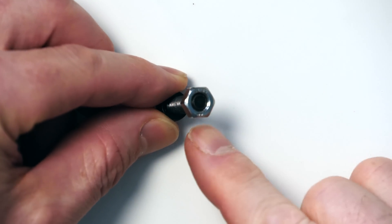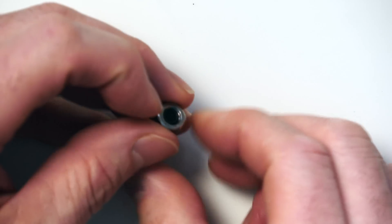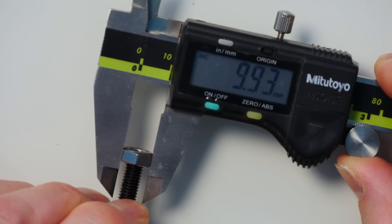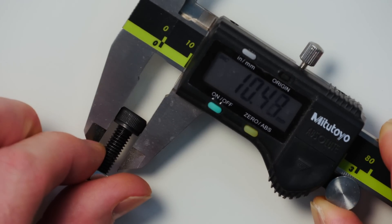The key to this project is an M6 bolt socket cap head screw and nut. 10mm on the nut, 10mm on the head, 6mm diameter, super easy to work with.